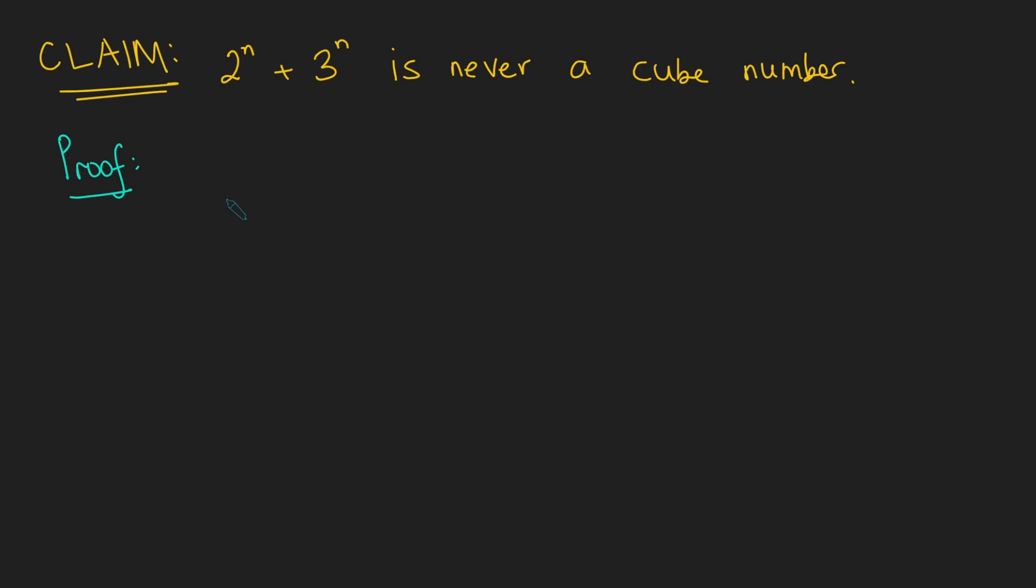Hi, thanks for joining me today. I'm going to be proving that 2 to the n plus 3 to the n is never a cube number, and I'm going to be using Fermat's Last Theorem to help me. Let's firstly deal with the case where n is 1. We just get 2 to the 1 plus 3 to the 1, which is 5, and that's definitely not a cube.